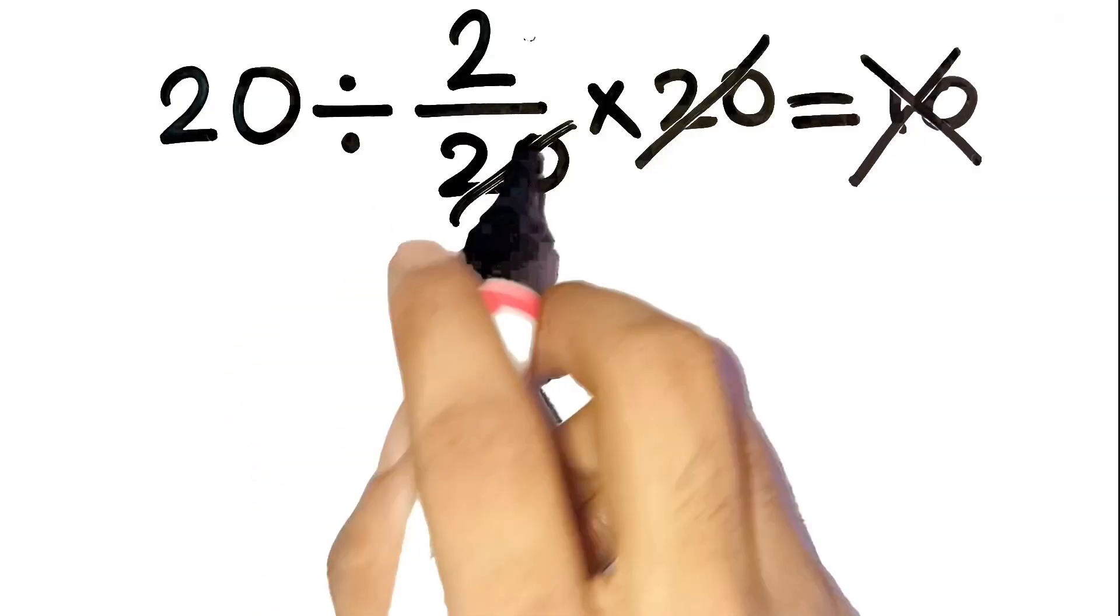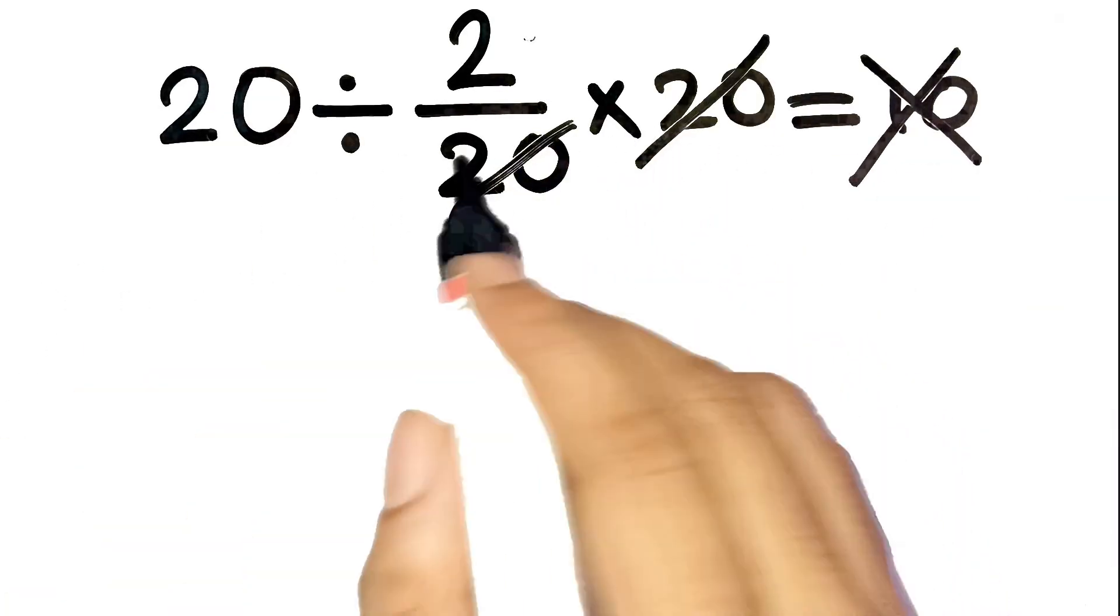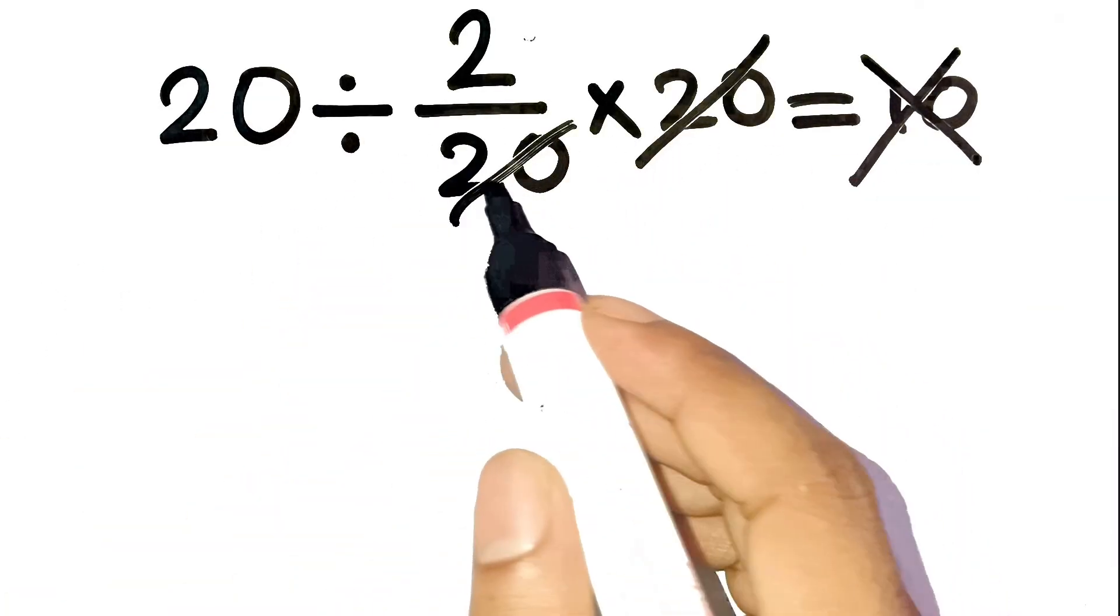That's exactly the trap most people fall into. It looks simple, but there's a sneaky fraction twist hiding here.